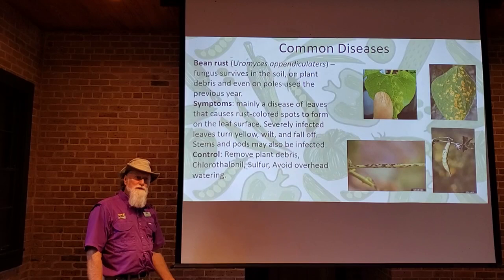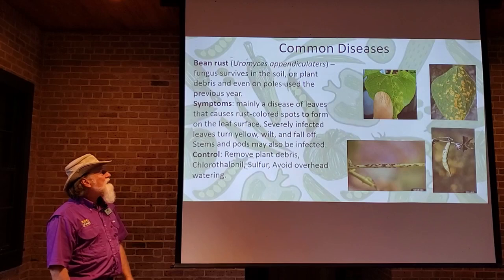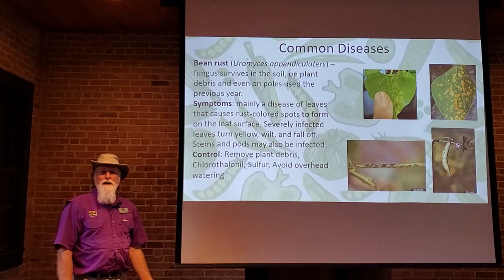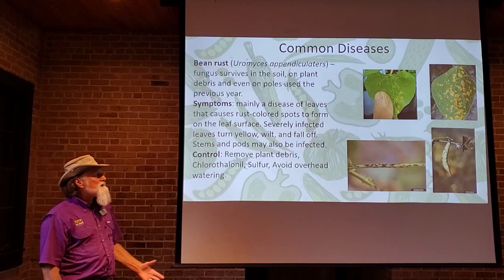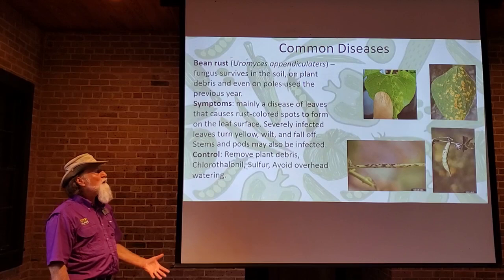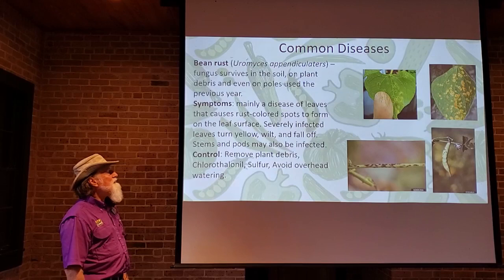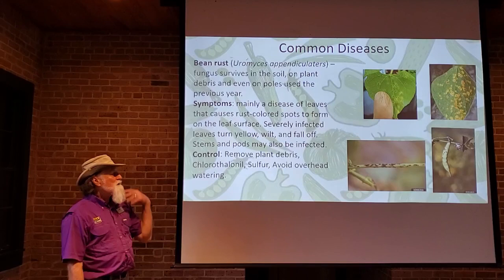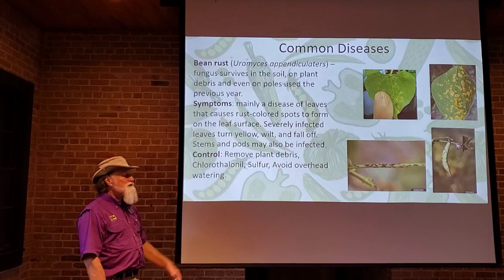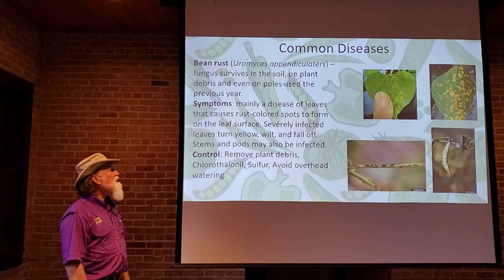Bean rust is pretty common, especially on snap beans and green beans. It can survive in the soil and plant debris — and this particular fungus can even survive on the poles you use to trellis your pole beans. If you have a rust problem, sanitize or replace your stakes. The rust produces rusty-colored spores. Remove plant debris, and fungicides such as chlorothalonil or sulfur are effective against rust. Avoid overhead watering.